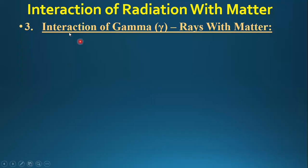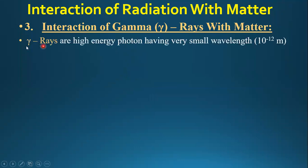The third type of interaction is the interaction of gamma rays with matter. Gamma rays are high-energy photons having a very small wavelength of about 10⁻¹² meters. Unlike alpha and beta particles, gamma rays are not particles but high-energy photons.